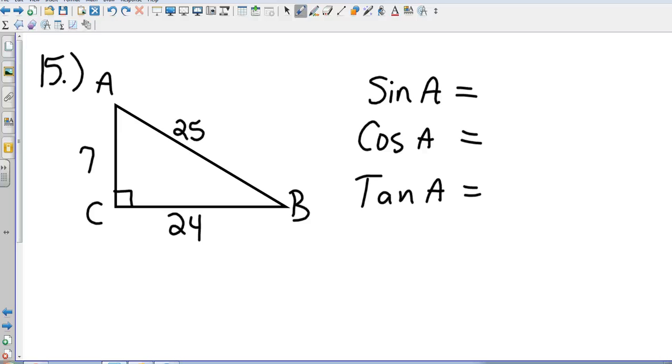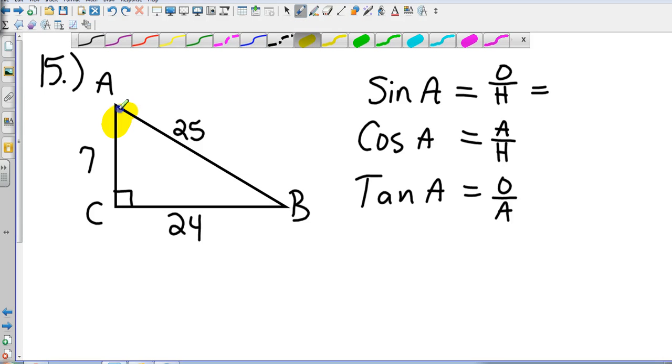Okay, when we're going to find sine, cosine, and tangent, we need to know the ratios. Sine is opposite over hypotenuse. Cosine is adjacent over hypotenuse. And tangent is opposite over adjacent. So, now we just need to fill in the spaces. So, since we're going from angle A, what side is opposite angle A? And that would be 24. And then what side is the hypotenuse? That would be 25. It's the longest side. So, my sine is 24 over 25.